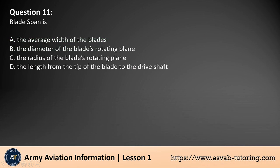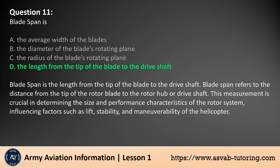Question 11. Blade span is: A. The average width of the blades. B. The diameter of the blades rotating plane. C. The radius of the blades rotating plane. D. The length from the tip of the blade to the drive shaft. The answer is D.